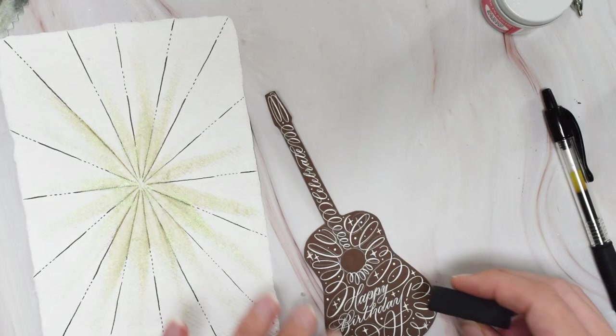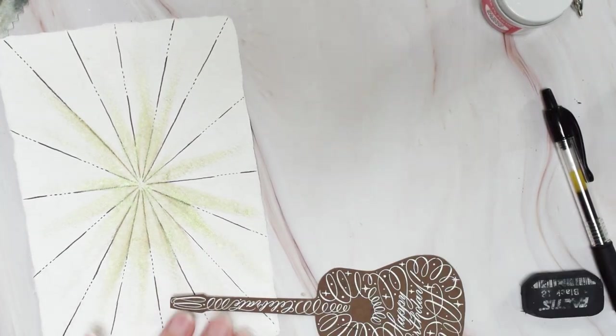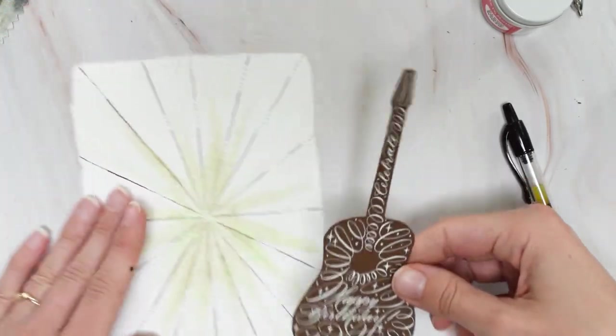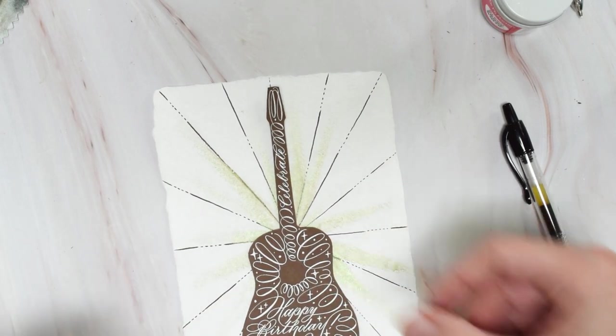Once you've written your greeting, go ahead and erase any pencil guidelines on the front of that guitar using a black eraser and then place the guitar on the card to make sure that everything looks good and you can come up with a placement that you're satisfied with.